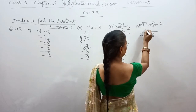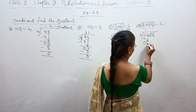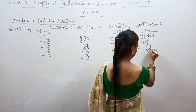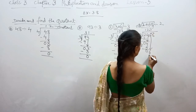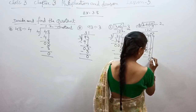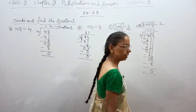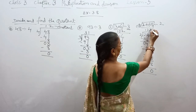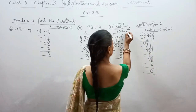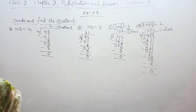First we take 2 divided by 2 — that is 1, minus it gives 0. Carry down 4: 2 into 4 gives 2, minus it gives 0. Carry down 6: 2 into 6 gives 3, minus it gives 0. Carry down 8: 2 into 8 gives 4, minus it gives 0. So the quotient is 1234.